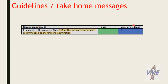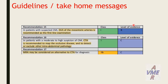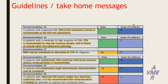Guidelines: In patients with suspected chronic mesenteric ischemia, ultrasound of mesenteric arteries is recommended as the first-line examination. In patients with moderate to high suspicion, CT angiography is recommended to map occlusive disease and exclude other intra-abdominal pathology. MRA may be considered as an alternative to CT angiography for diagnosis.